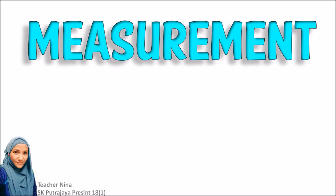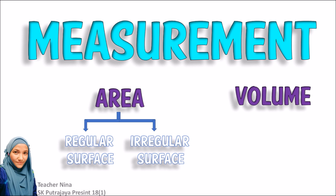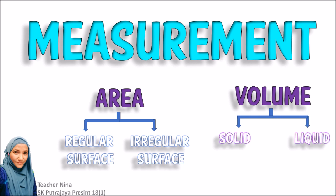As a guideline for this topic, we are going to learn two measurements. The first one is area, and the second one is volume. For area, we will learn how to measure the area of a regular surface and also an irregular surface. Whereas for volume, we are going to learn how to measure the volume of solid and also liquid. And for solid, we will be measuring a hollow box and also irregular shaped volume.